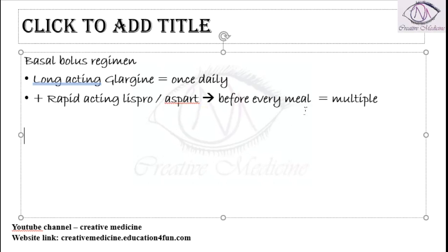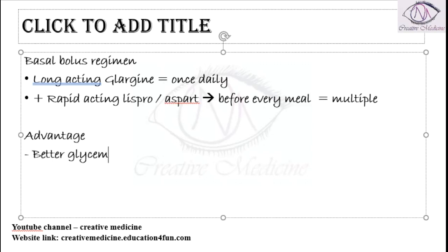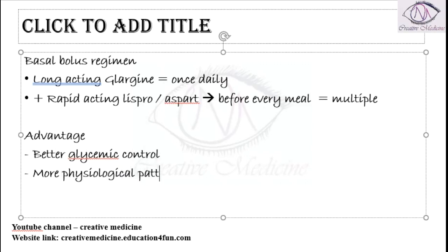Because lispro and aspart are rapid-acting, giving them before every meal decreases post-prandial blood glucose levels. The main advantage of the basal bolus regimen is that it provides better glycemic control.